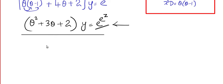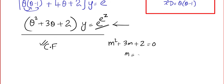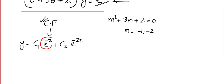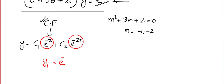The first thing to do is find the complementary function. The auxiliary equation is m² + 3m + 2 = 0. Solving gives m = −1 and m = −2. So our complementary function is y = c₁e^(−z) + c₂e^(−2z). I'm going to call the first one y₁ = e^(−z) and the second one y₂ = e^(−2z). If you don't know variation of parameters, I strongly recommend you pause and watch that video first.